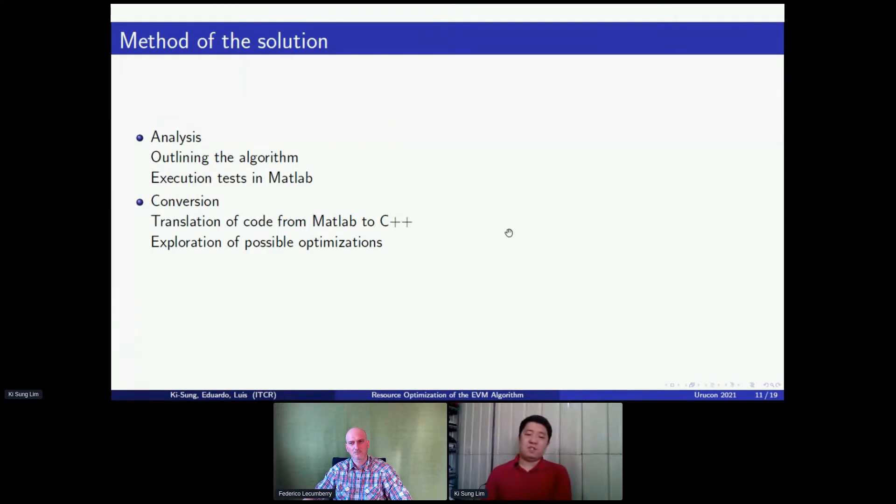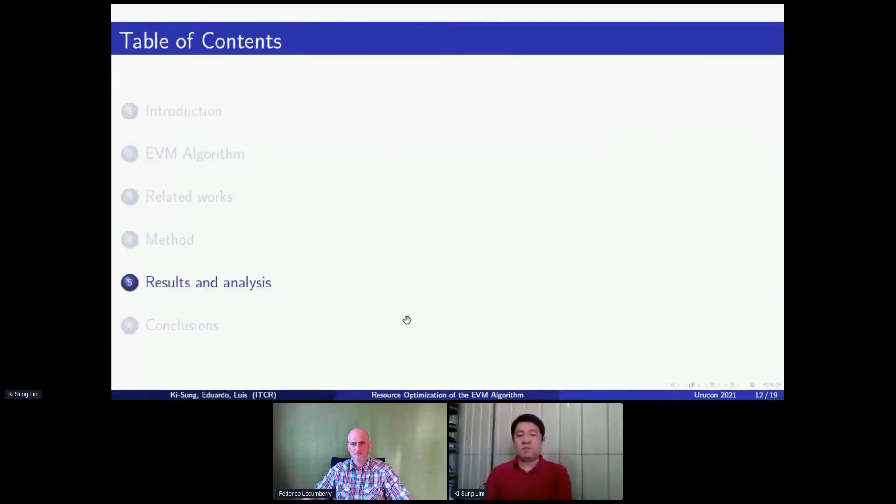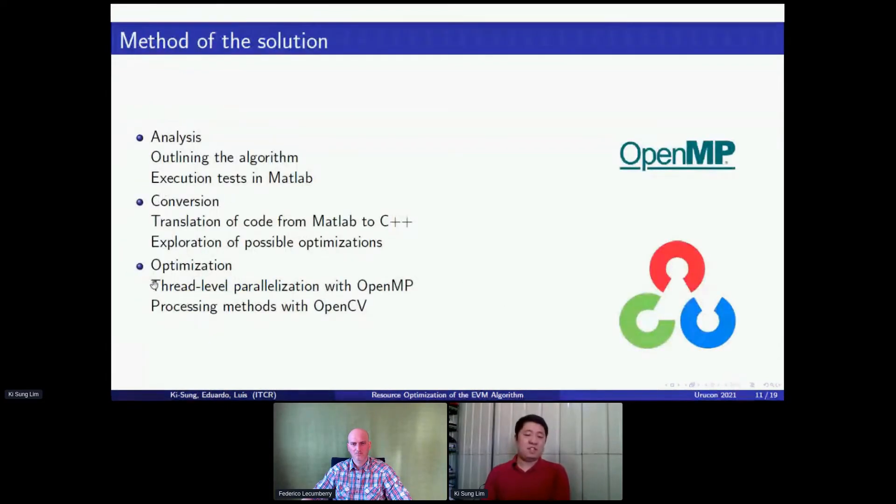Also in this phase, we explored possible optimizations that we could use for the resources that are present in embedded systems. We used optimization using thread parallelization with OpenMP in the processing module where processing loops are applied, and then we used optimize image processing methods with OpenCV using the language C++.